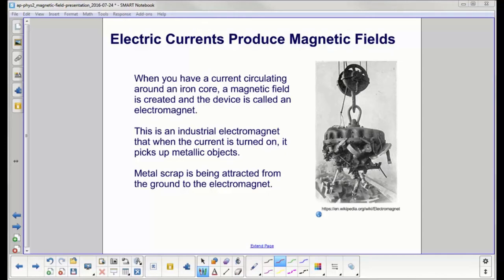When you have a current circulating around an iron core, you create a magnetic field, and that device is called an electromagnet. When you turn the current off, it is no longer a magnet. A very practical use for this are industrial electromagnets. Here's the magnet with wires going down to it, picking up a bunch of metallic junk. You can pick things up, swing the scrap somewhere else, and then turn the current off. The junk is no longer attracted and it falls down.